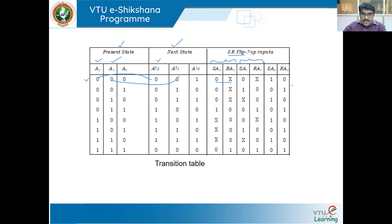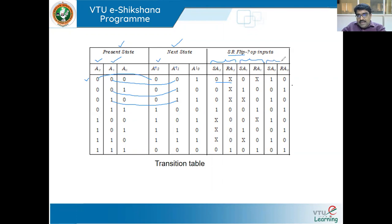To find the S and R of A1 flip-flop, I look at the present state A1 and next state A1+. 0→0 is 0 don't-care, 0→1 is 1 0, 1→1 is don't-care 0, and so on. Similarly for A0: present state 0, next state 1 → 1 0; present state 1, next state 0 → 0 1. We get an alternating 1-0, 0-1 combination.